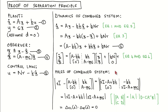Since we've described the full system in state variable format, we can easily calculate the poles of the full system as the solution to the determinant of sI minus the A matrix of the full system, set equal to zero. After combining the two matrices in the determinant, we get this expression.